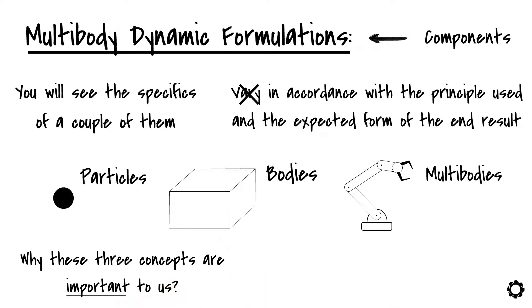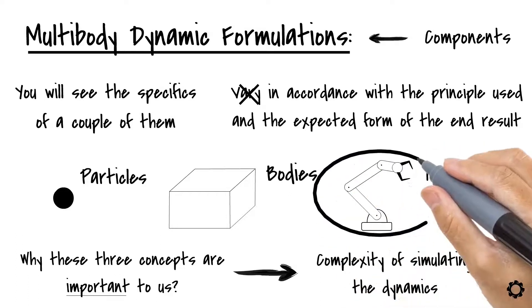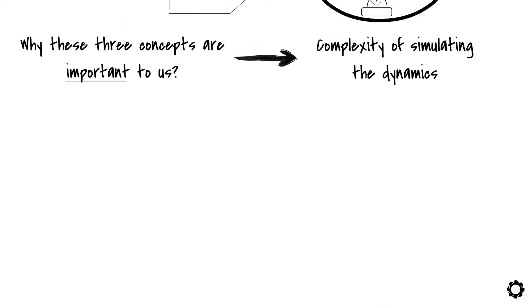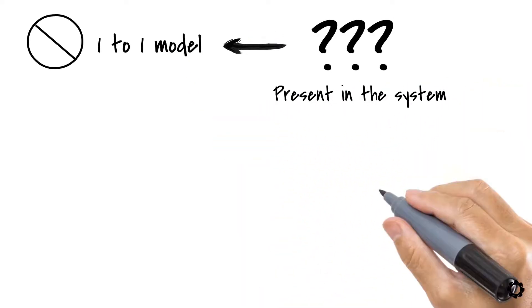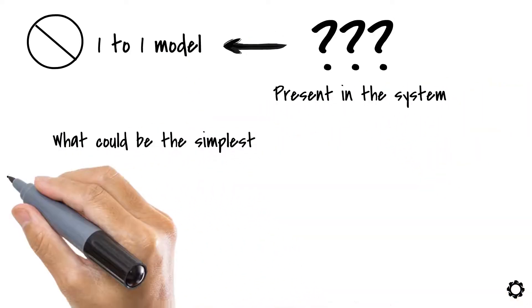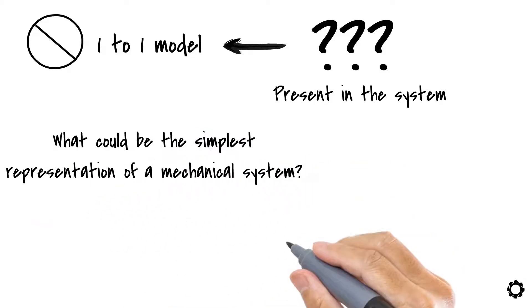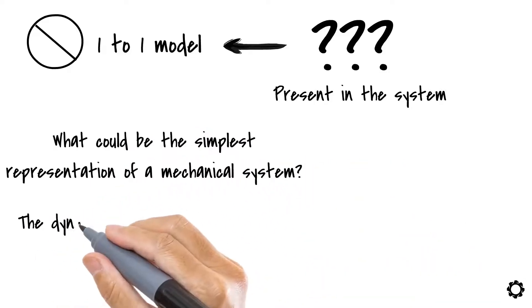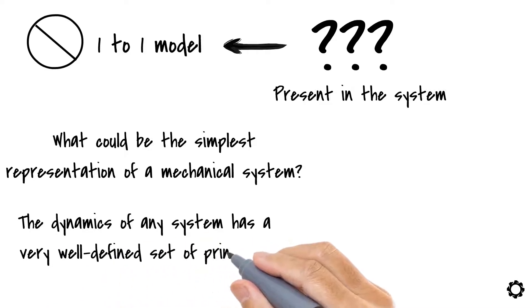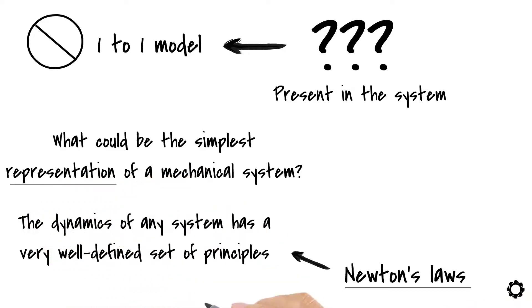Let's introduce the importance by looking at the complexity of simulating the dynamics of a physical mechanical system. We know that we cannot have a one-to-one model because of the many unknowns present in the system. But what could be the simplest representation of a mechanical system? Well, the dynamics of any system has a very well-defined set of principles that governs them – Newton's laws. In Newton's laws, the simple representation of mechanical systems can be done using particles.